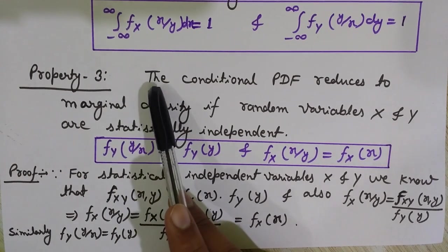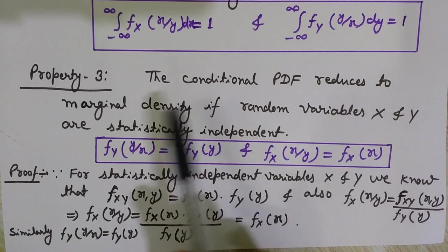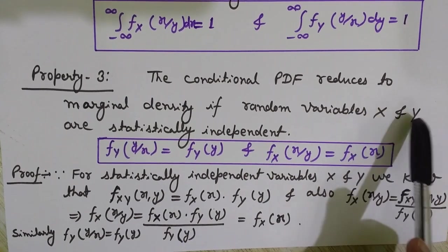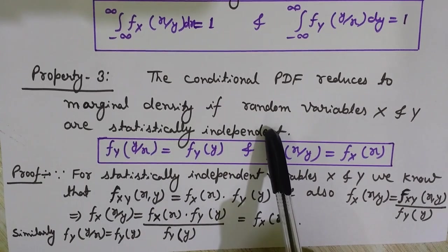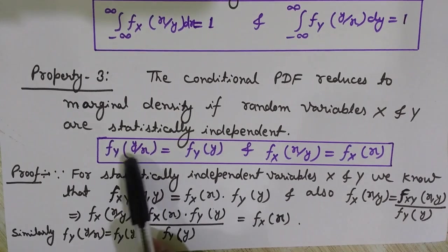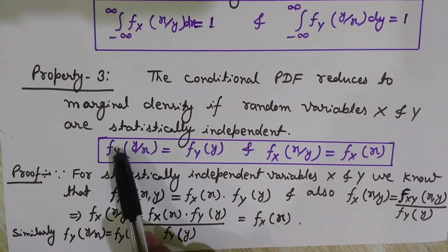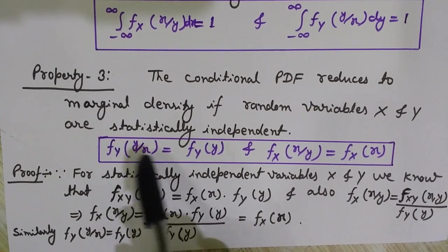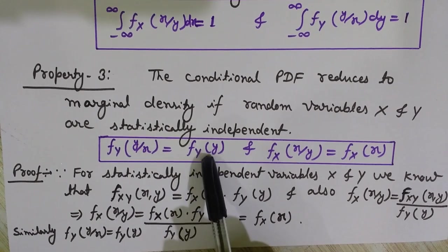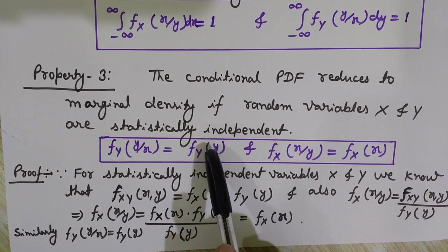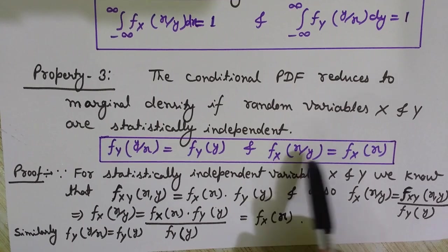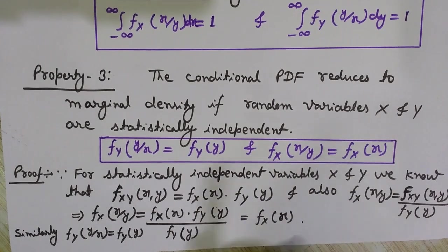Property number three: the conditional PDF reduces to the marginal density if random variables X and Y are statistically independent. If X and Y are statistically independent, the conditional PDF of Y given X simply becomes f(Y) — the marginal density of Y. Similarly, the conditional PDF of X given Y reduces to the marginal density f(X).